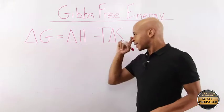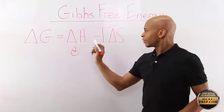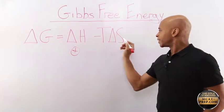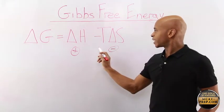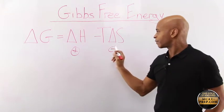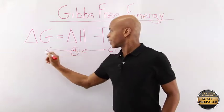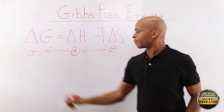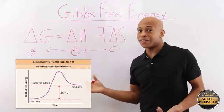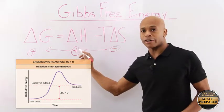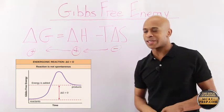First, let's say that delta H is positive. If delta H is positive and delta S is negative, this is a negative times a negative, which makes this positive. This is already positive. That means that delta G will be positive. So the reaction is not spontaneous. It's not spontaneous in a situation where energy is required and the products become more ordered.